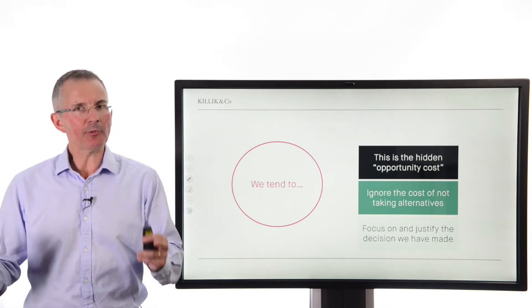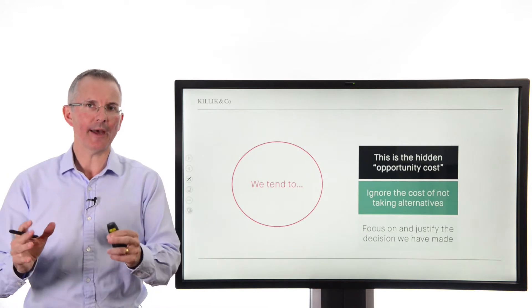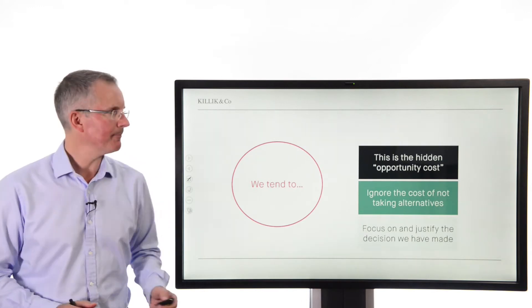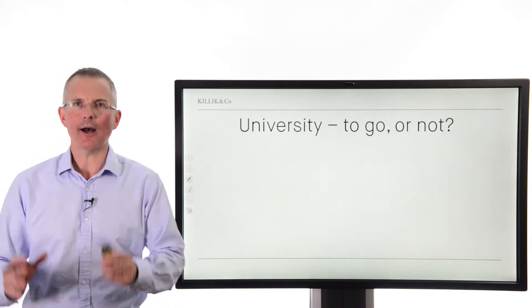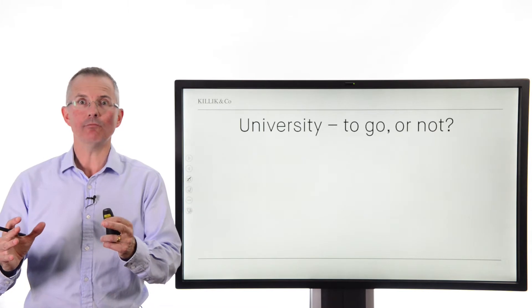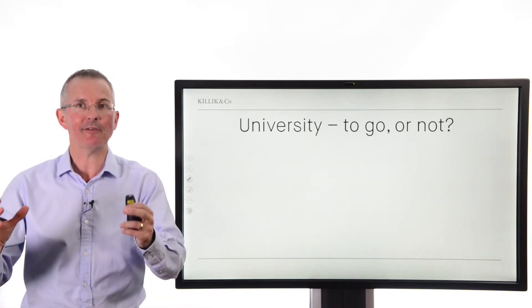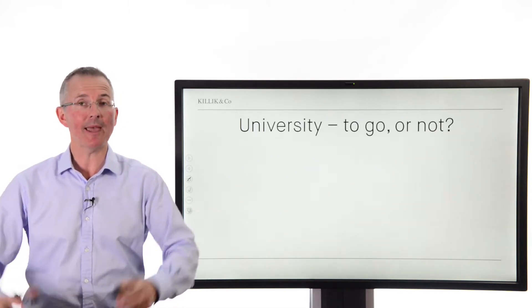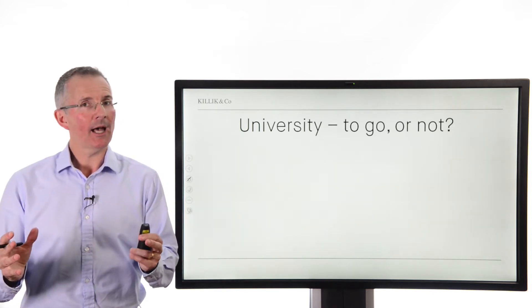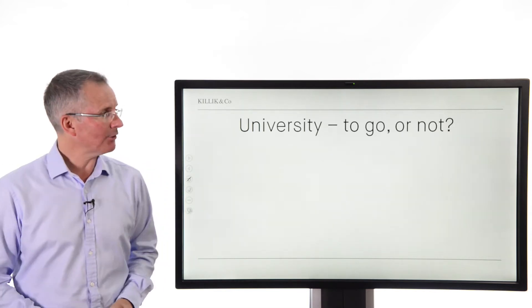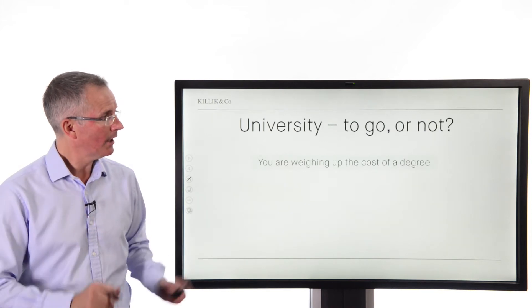To bring that down to earth, let's look at two situations where this is a danger. First example: university. It could be that you were weighing up the costs and benefits of going to university — maybe your kids are trying to weigh this up. Make sure you factor in two aspects of it, not just one.